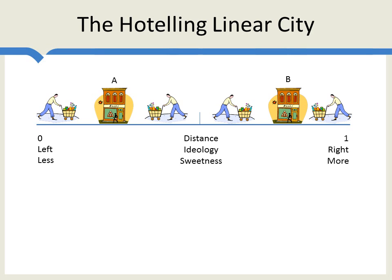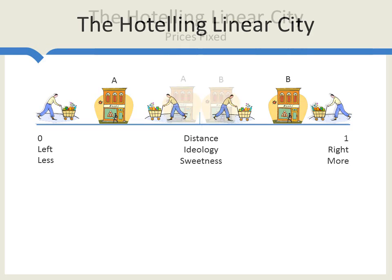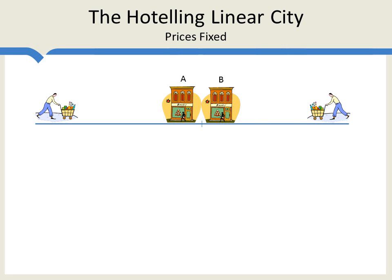I said 'if the firms locate here,' but what we really want to understand is where will the firms locate and what prices will they charge? That turns out to be quite a difficult problem, but we're going to take it in steps. Let's begin by assuming that prices are fixed so firms only make a location decision. In this case, we can show that firms A and B will choose to locate exactly in the middle of Main Street — that is, there will be a principle of minimum differentiation. A will get half of the market, and B will get half of the market.